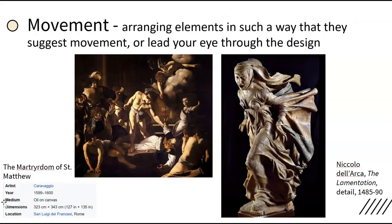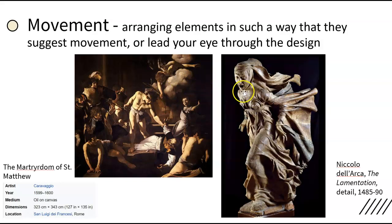Movement is arranging elements in such a way that they suggest movement or lead your eye through the design. These two pieces use movement in different ways. In the painting on the left, Caravaggio uses an effect known as chiaroscuro — a strong contrast in light and dark areas — to move the viewer's eye around the painting. We might notice the figure at the center first, then follow the lines of light around the painting. In the sculpture on the right, the figure's pose suggests motion and the use of diagonal lines in the limbs and the folds of cloth enhances that sense of movement.